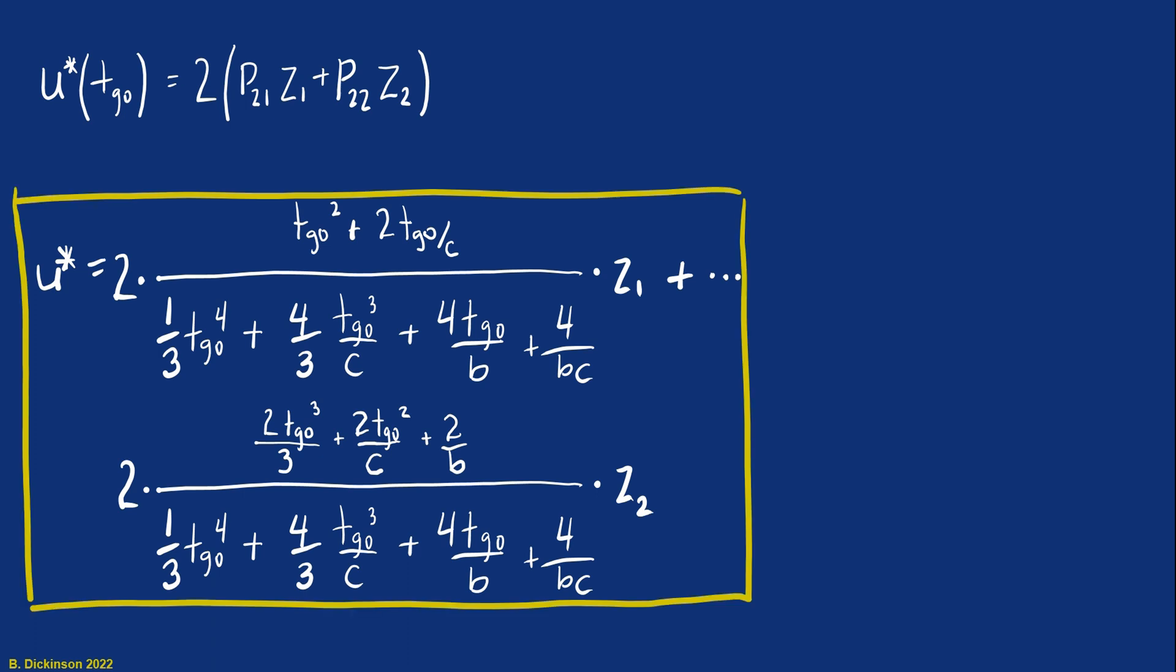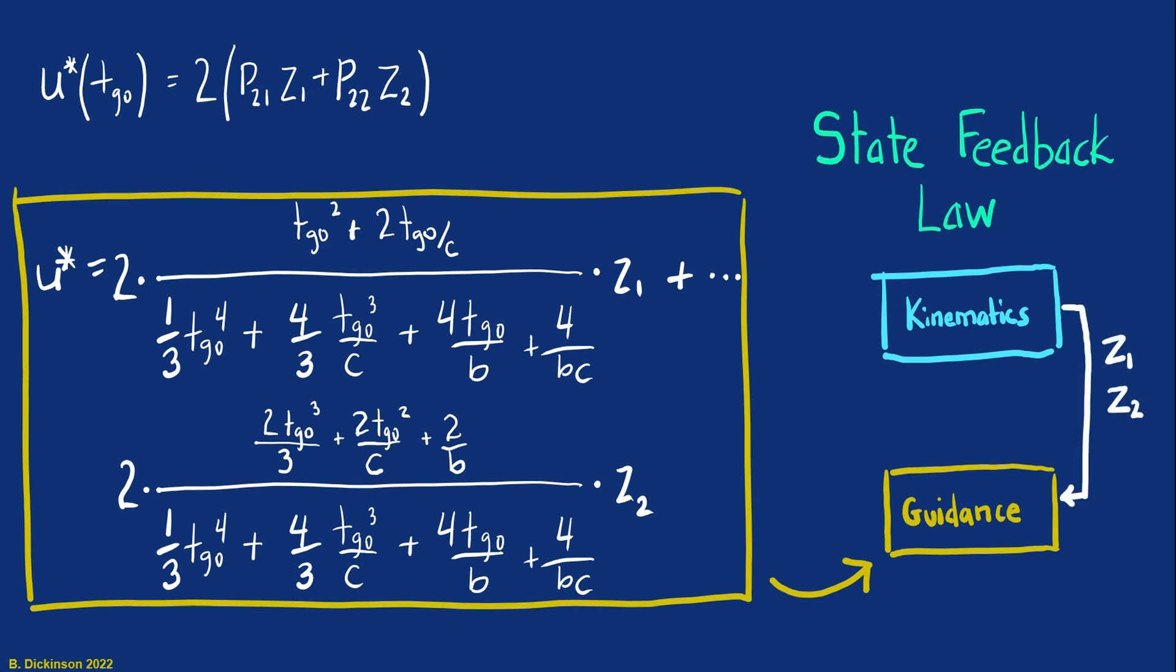So substituting in those terms now. This is a feedback control law. It's a guidance law. We have the kinematics. The kinematics output the state Z1, Z2. That's relative position, relative velocity. The guidance is determining the optimal acceleration that minimizes that performance index over the time interval. So it provides that U star. They're fed back into the kinematics. The kinematics update. The guidance law is applied. The process continues until intercept occurs.